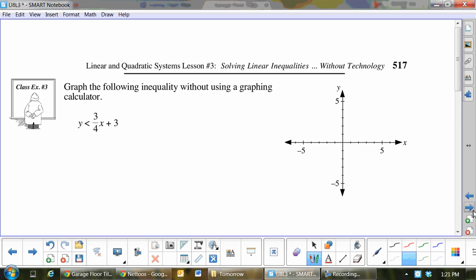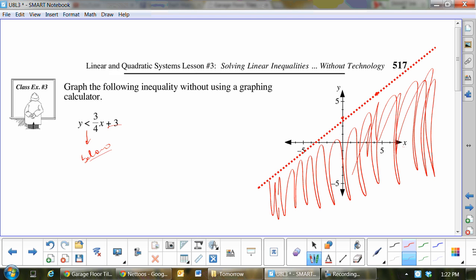Let's keep on going here. Graph this without using a calculator. Y is less than 3 fourths x plus 3. So, we know the y-intercept is 3. We know that the slope is to go up 3, 1, 2, 3, and over 4. So, that would be 6, 4, right? Now, since it's just going to be a less than, I'm going to use a dotted line. So, I've got a dotted line there. And it says less than. Now, less than, I would shade below. This would be the below. It's just that simple.